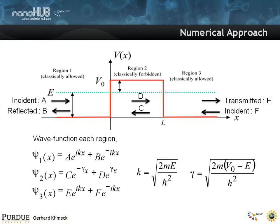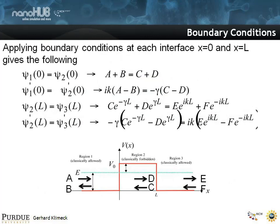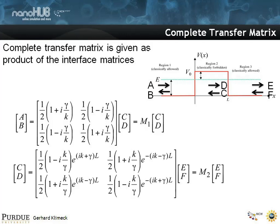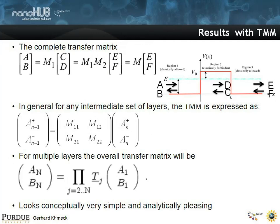We stepped through this earlier with a double interface — a single barrier. We've seen the math in the previous presentation, and how this transfer matrix for a single barrier structure pretty much emerges automatically, from the first interface and then the second interface. In the end, you can generalize this where you indeed have a transfer matrix for the whole system that is the product of the transfer matrices of the individual subsystems.